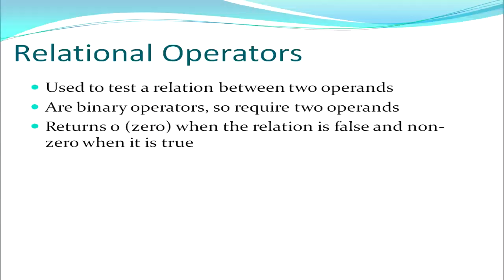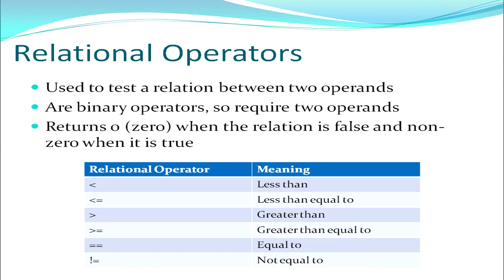Next we move on to relational operators. A relational operator is used to test a relation between two operands. Since it compares two operands it is a binary operator. It returns 0 if the relation being tested is false, and returns a non-zero value when it is true. The various relational operators are: less than, less than or equal to, greater than, greater than or equal to, equal to, and not equal to.